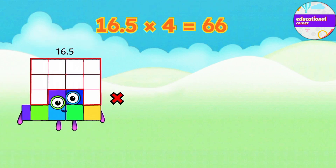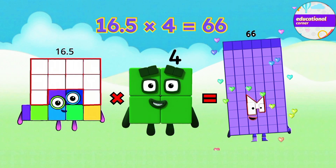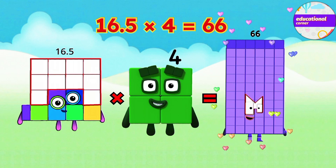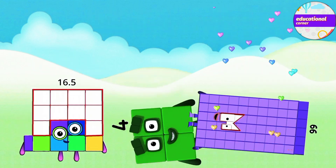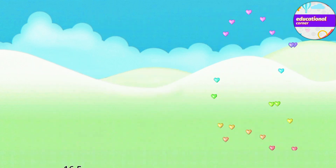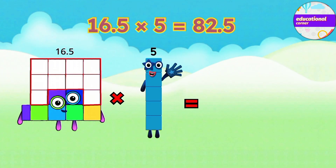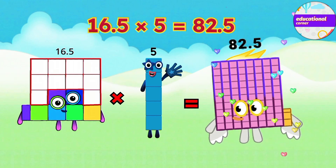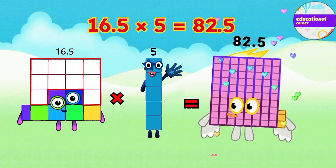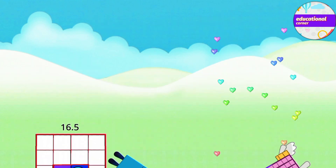16.5 multiplied by 4 equals 66. 16.5 multiplied by 5 equals 82.5.